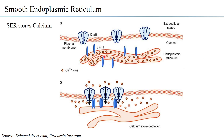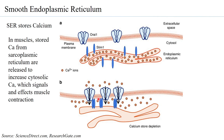The smooth ER takes up calcium and stores it within its lumen. When calcium in the SER is low, the surface molecules on the SER come close to calcium channels on the plasma membrane and together initiate the opening of those channels to bring in calcium. Once calcium enters the cytoplasm, the SER takes it up via transporters and stores it. Calcium is important because it acts as a signal molecule in many cell types.